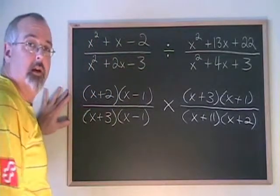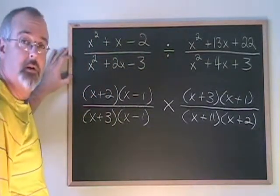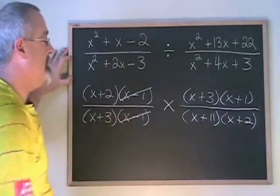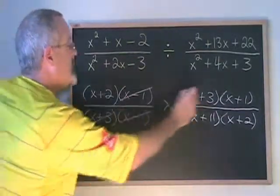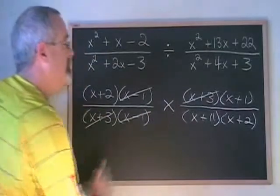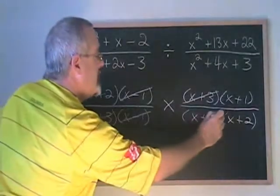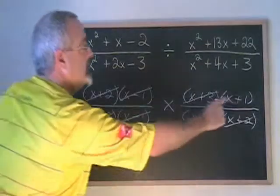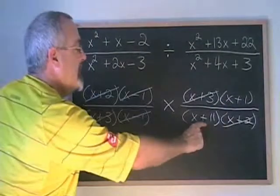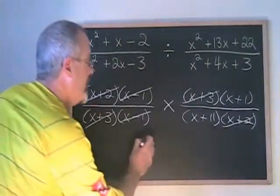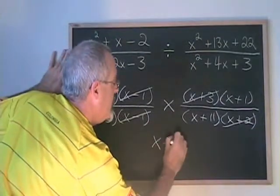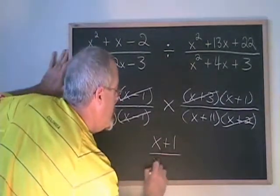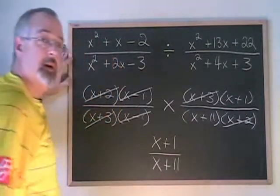Now this is just like a multiplying algebraic fractions question. We will cancel and simplify. These x minus 1s cancel. These x plus 3s cancel. And all that's left is the x plus 1 here and the x plus 11 down there. So our final answer is x plus 1 over x plus 11.